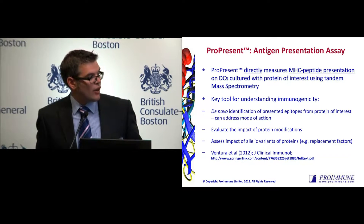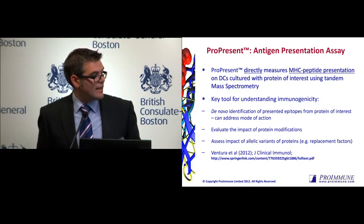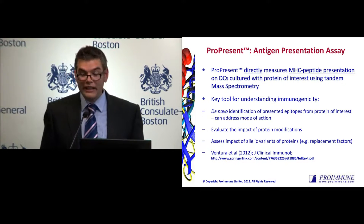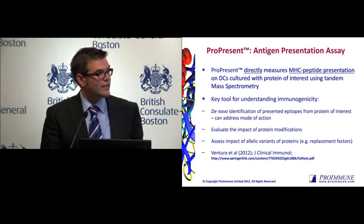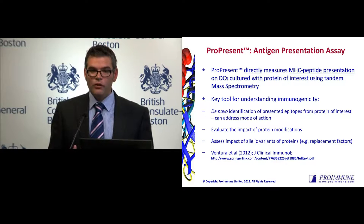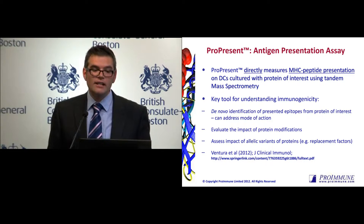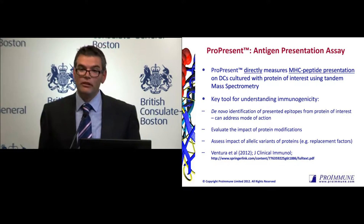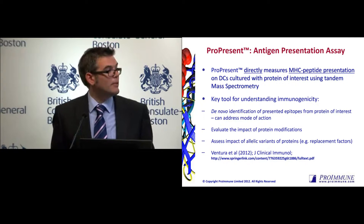We can identify de novo peptides that are presented from our molecule of interest. Introducing point mutations may affect whether that peptide is even presented. We can assess the impact of allelic variants of proteins — we've talked about factor VIII and how that can influence things. There's also a recent publication by Sanofi Pasteur in the Journal of Clinical Immunology. Although the case study uses our standard service with healthy donor dendritic cells, the assay is very flexible — we can also use it to analyse antigen-presenting cells from preclinical models, and we can look at MHC class I and class II, including DR, DP, and DQ.